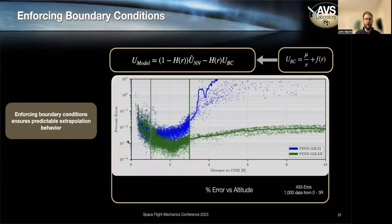And to show this, we look at the error as a function of altitude for the second generation PINN gravity model, third generation green. And you can see as soon as we leave the bounds of the training data at three radii, PINN gravity model two immediately diverges, whereas PINN gravity model three stays at a nice comfortable 100th of percent error all the way out to infinity.